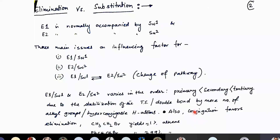The second factor is that conjugation could also favor elimination. If it is conjugated, your elimination product will be much higher. For example, if you take CH3CH2Br, you will get only 1% of alkene as the product. But if it is PhCH2CH2Br, the yield becomes 99%, because it could stabilize or increase the acidity of that position.